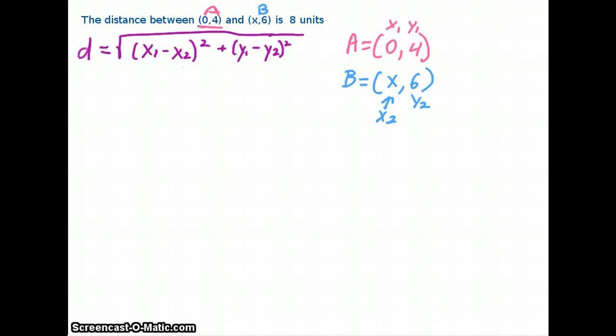Now it already tells us that the distance between these is 8 units. Well, that's d right here. And then we know that x₁ is 0, so I'm just going to say (0 - x)², where this x is x₂, has to be squared. And then in this set of parentheses here, our y values go in. Well, y₁ is 4, and our y₂ is 6, and just make sure that we square it.